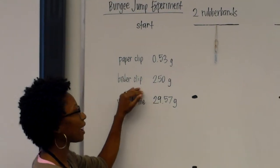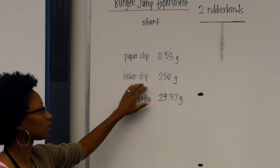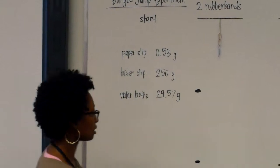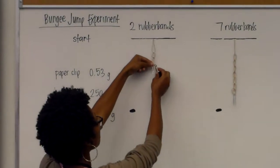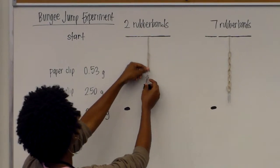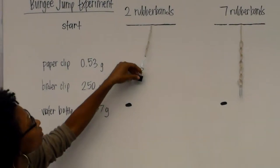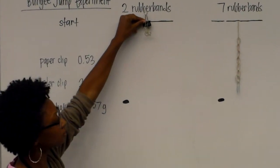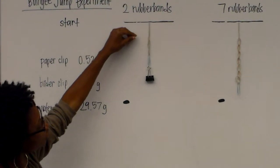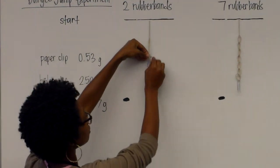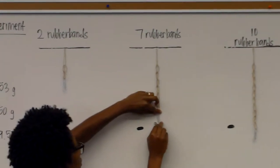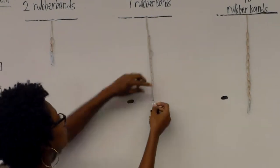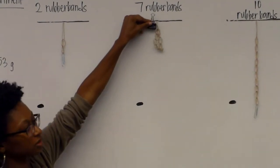So the binder clip is already 2.5 grams. I'm going to add it to the paper clip. That's a total of about three grams. Starting from the top for each configuration, including the seven rubber bands.